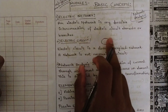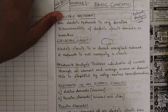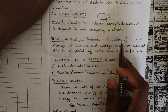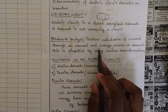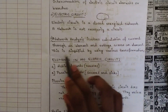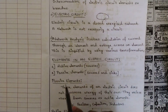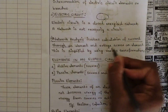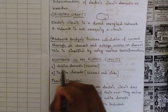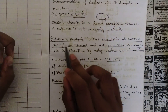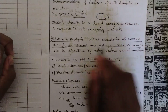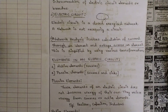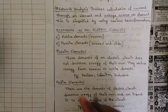A circuit has active and passive elements. Network analysis involves the calculation of current through an element and voltage across any element. This is simplified by using various transformations which we are going to study in this subject. Keep in mind: current through an element, and voltage across an element.